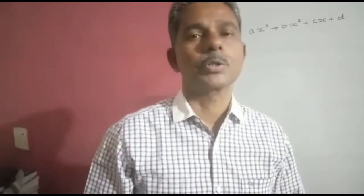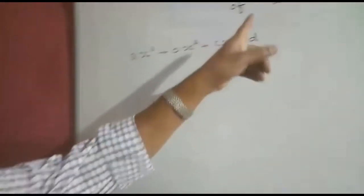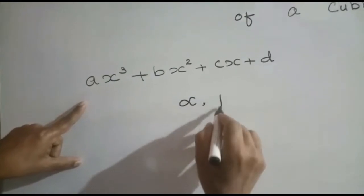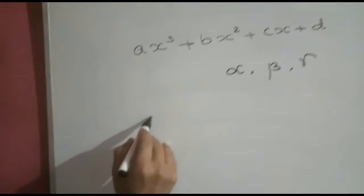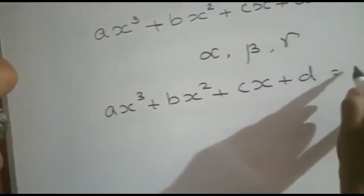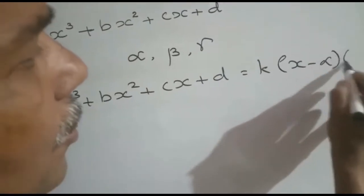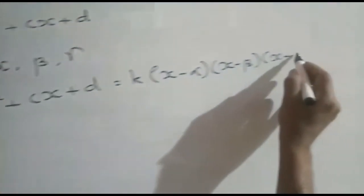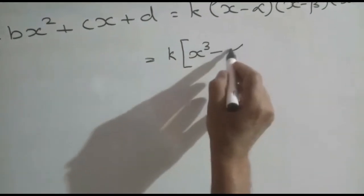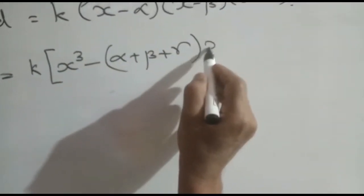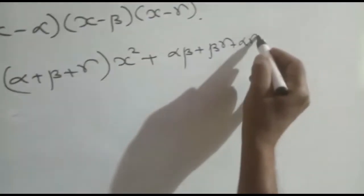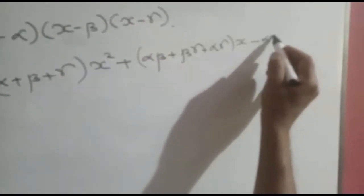Let us also see the relationship between zeros and coefficients of a cubic polynomial. As the degree of a cubic polynomial is 3, it can have three zeros. Let them be alpha, beta, and gamma. Then, as before, ax cubed plus bx squared plus cx plus d can be written as k into (x minus alpha)(x minus beta)(x minus gamma). Simplifying this, we get k into x cubed minus (alpha plus beta plus gamma) x squared plus (alpha beta plus beta gamma plus alpha gamma) x minus alpha beta gamma.